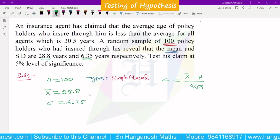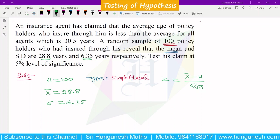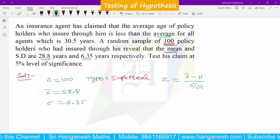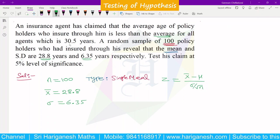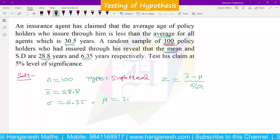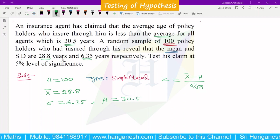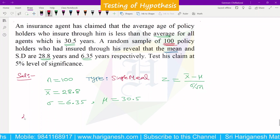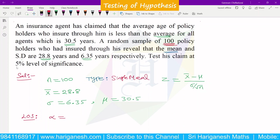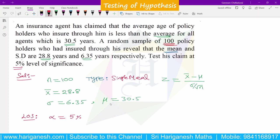The values given: x bar equals 28.8, standard deviation sigma equals 6.35, and the population mean is 30.5. The level of significance is 5% level.